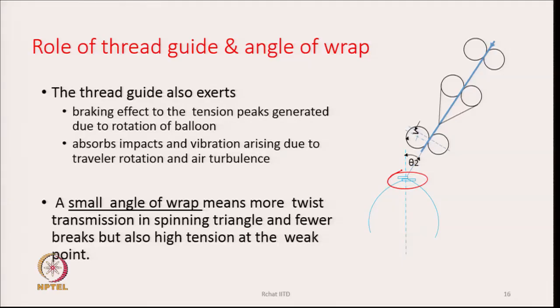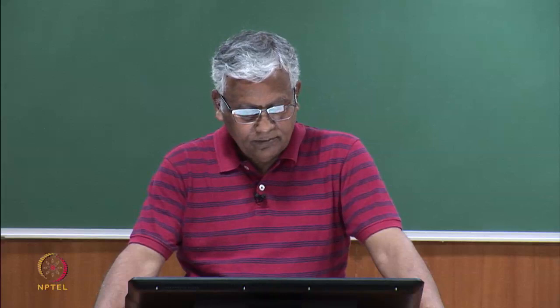A small angle of wrap means more twist transmission to the spinning triangle and potentially fewer breaks, but also higher tension at the weak point. When the wrap angle is less, the contact area between the thread and thread guide is smaller, so twist transmission will be more but tension transmission will also be more. The net effect remains uncertain and cannot be predicted easily.